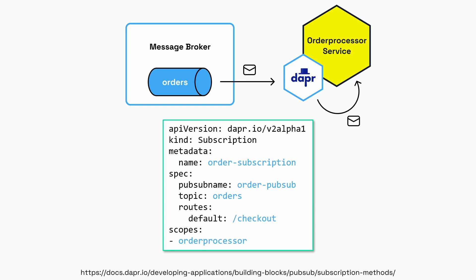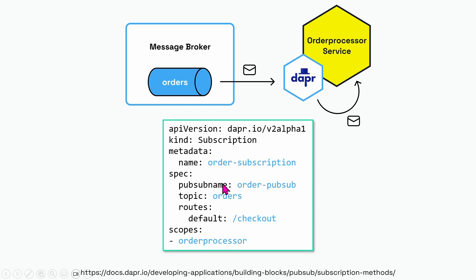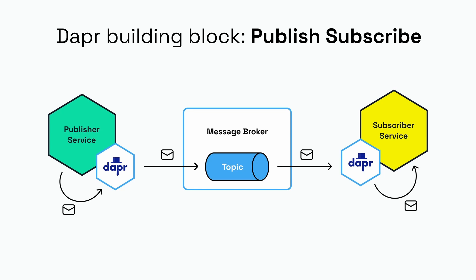In the YAML file to create a subscription, you need to provide a name for the subscription, define the component name of the pubsub component you're using ("order-pubsub"), and define the name of the topic you're listening to. You also need to define the route in your application that will receive the orders — in this case, orders will be forwarded to a "checkout" route. Finally, there's the scope, so this subscription is scoped only to the order processor service.